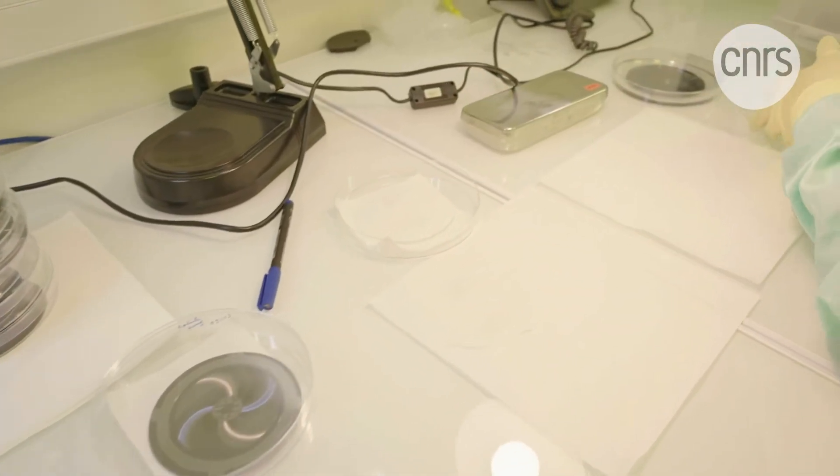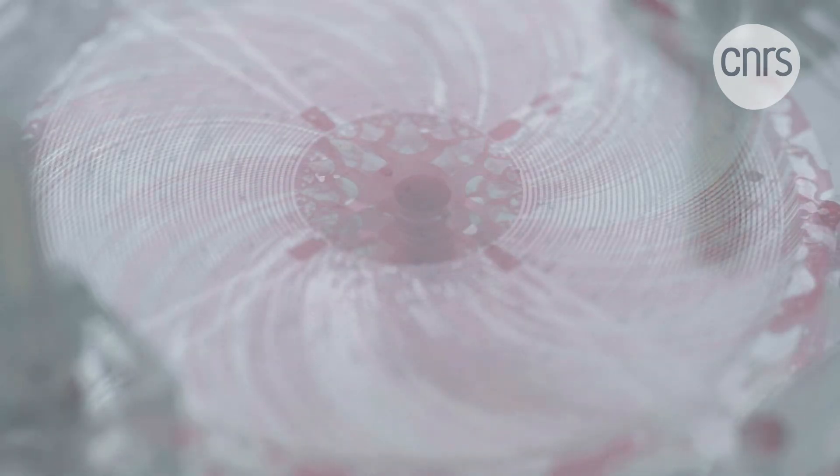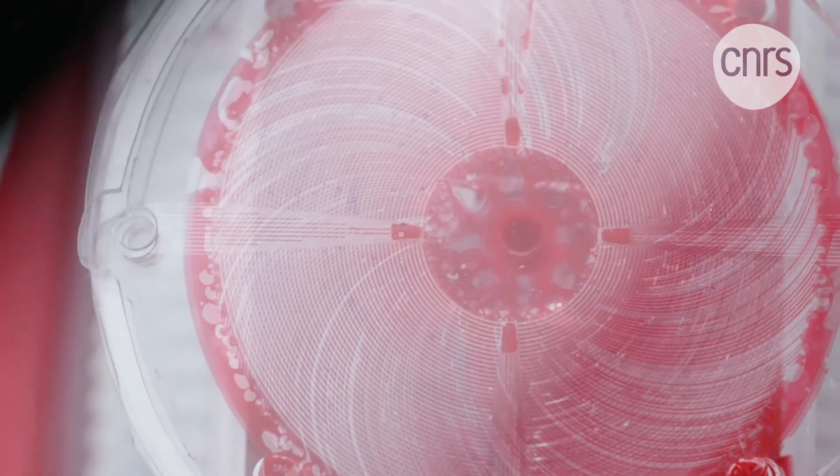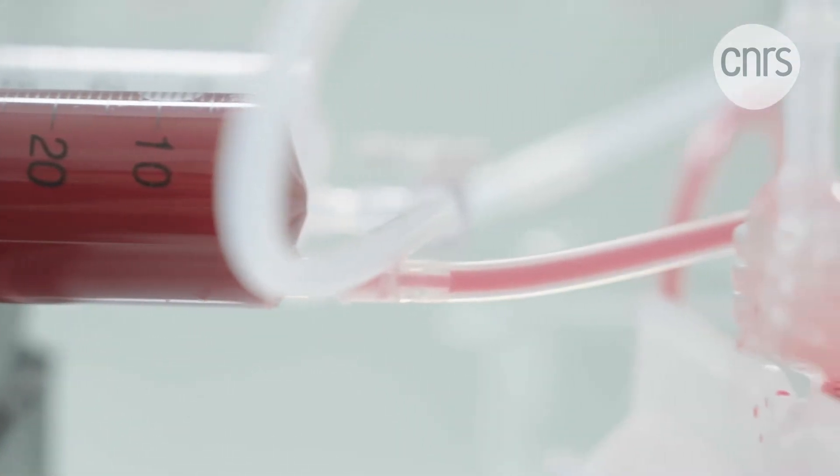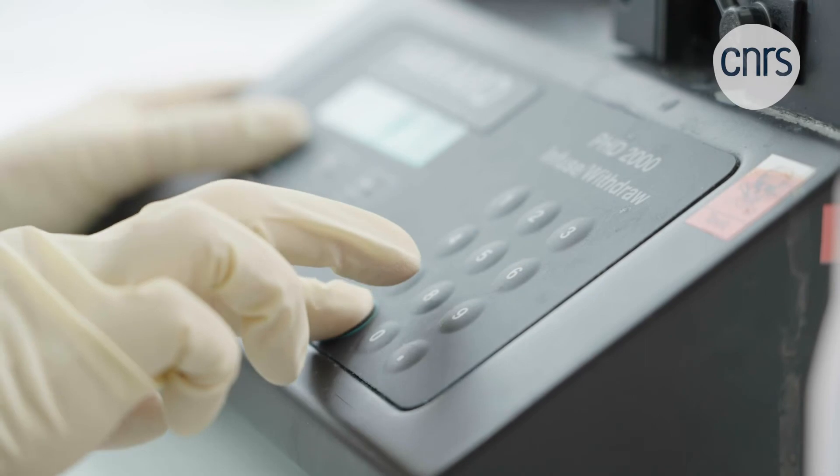Thanks to microfluidics and microfabrication techniques, we are able here to create devices composed of microchannels in which blood circulates, and microchannels in which oxygenation gas flows, whether air or pure oxygen. And between these two channels, a thin membrane allows the exchange of gas, transferring oxygen to the blood and releasing carbon dioxide. So this performs the physiological function of a lung. Here we can see that in three modules placed on top of one another, we have a blood circulation of 45 milliliters per minute.